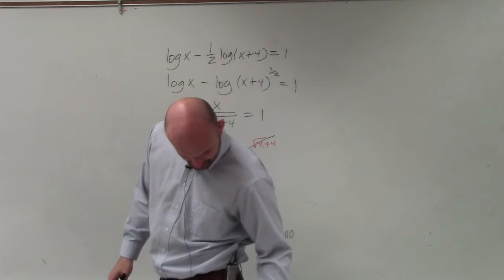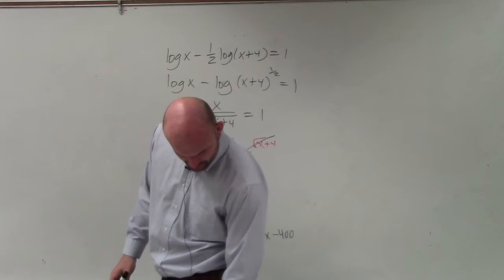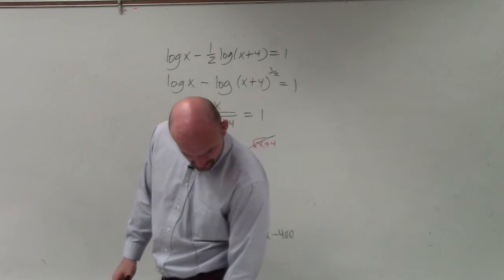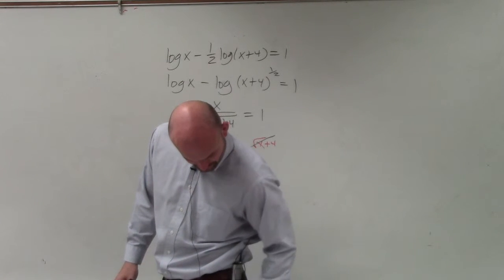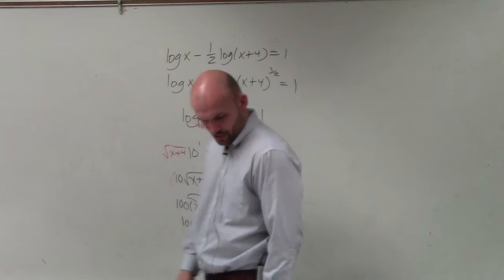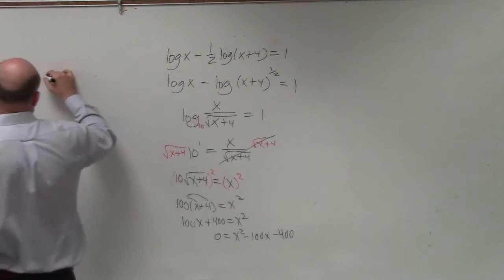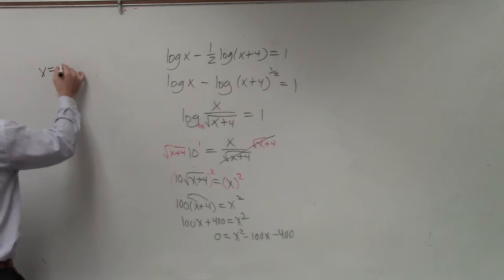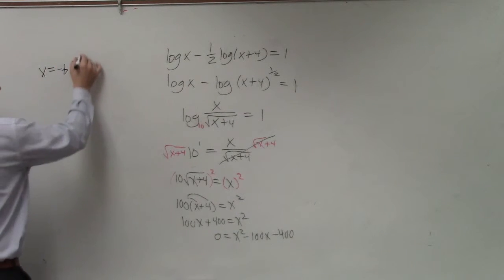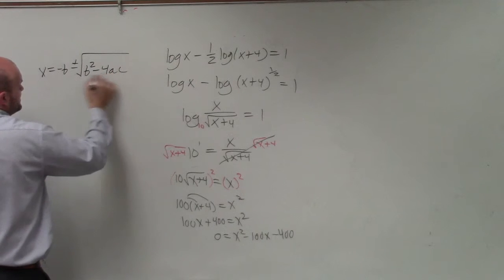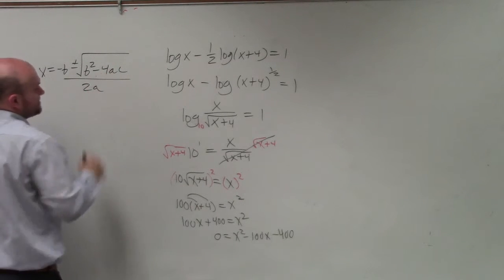All right. So I'm going to just double check. What section was this? 3.5. So then we'd go ahead and use the quadratic formula. So if you guys don't remember the quadratic formula, x equals opposite of b, plus or minus the square root of b squared minus 4 times a times c, all over 2 times a.